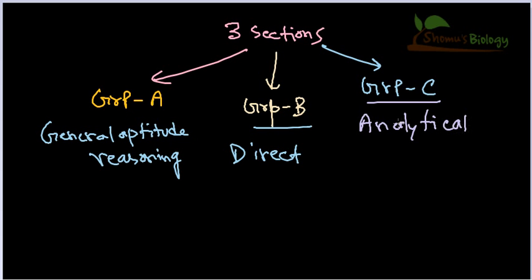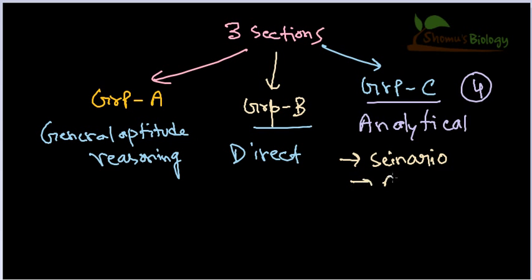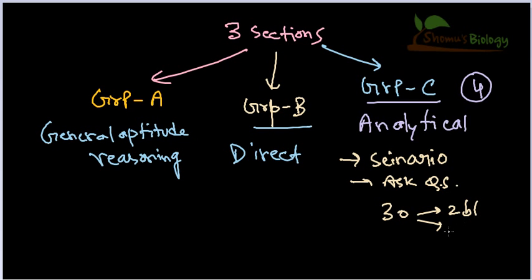All Group C questions carry four marks each. These analytical questions are difficult to solve because you need to develop analyzing power on your own. They will give you a scenario and then ask questions based on it. For example, in a region there are thirty peppered moths — two black and twenty-eight white.